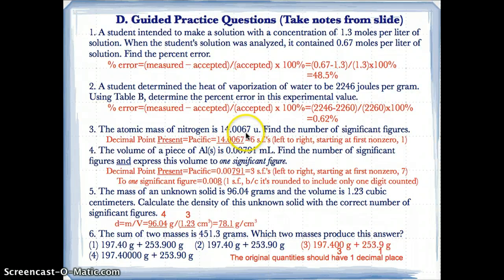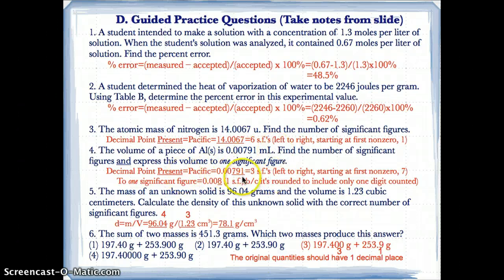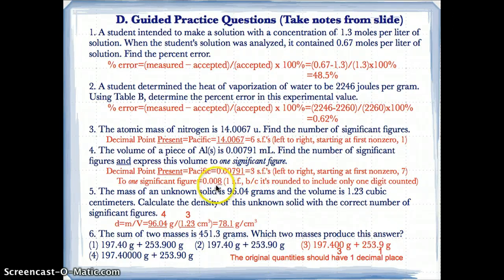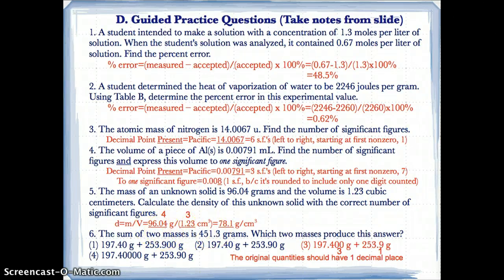For number two: the accepted value for the heat of vaporization of water is 2,260 and the measured value is 2,246. Doing 2,246 minus 2,260 divided by 2,260 times 100% gives 0.62%. For 14.0067: decimal point is present, start at the first non-zero digit going left to right — 1, 4, 0, 0, 6, 7 — six significant figures. For 0.00791: decimal present, start at 7, 9, 1 — three significant figures.